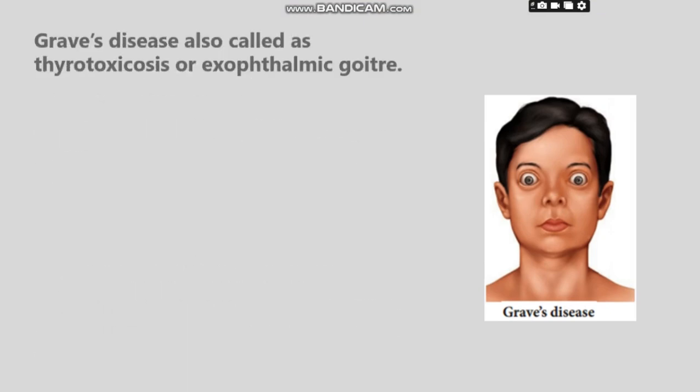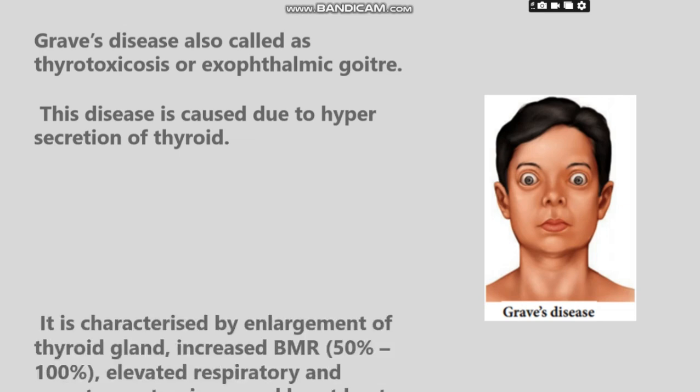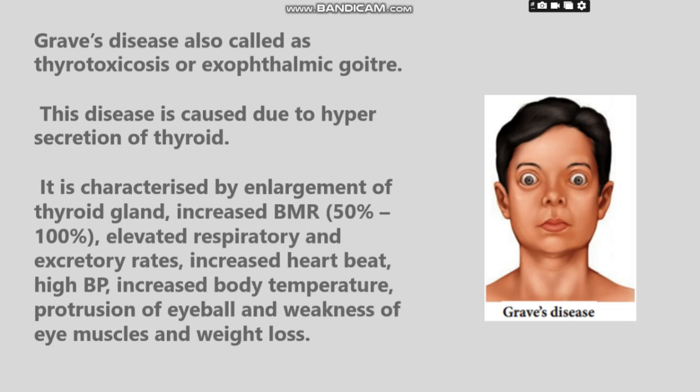Graves' disease, also called thyrotoxicosis or exophthalmic goiter, is caused due to hypersecretion of thyroid. It is characterized by enlargement of thyroid gland, increased BMR, elevated respiratory and excretory rates, increased heartbeat, high BP, increased body temperature, protrusion of eyeball, weakness of eye muscles, and weight loss.